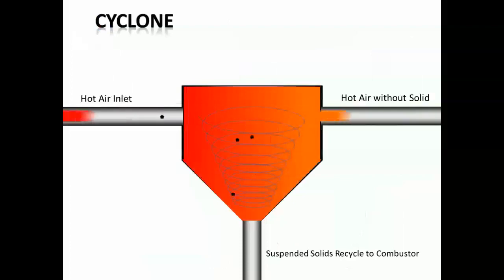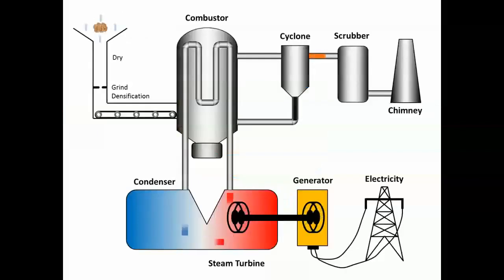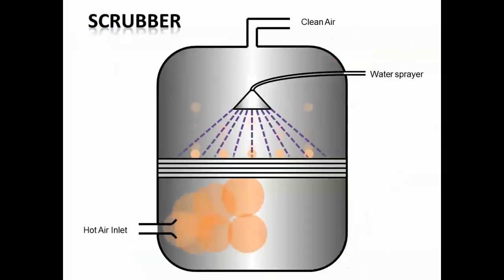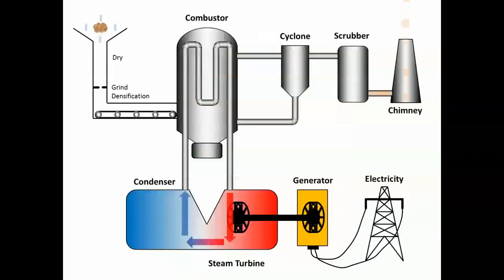The diagram shows the combustion process: hot air causes turbines to rotate, solid particles are removed, and hot air without solid particles is cleaned. Clean air passes through a scrubber, turbines rotate to drive a generator producing electricity, and clean air is recycled back into combustion.